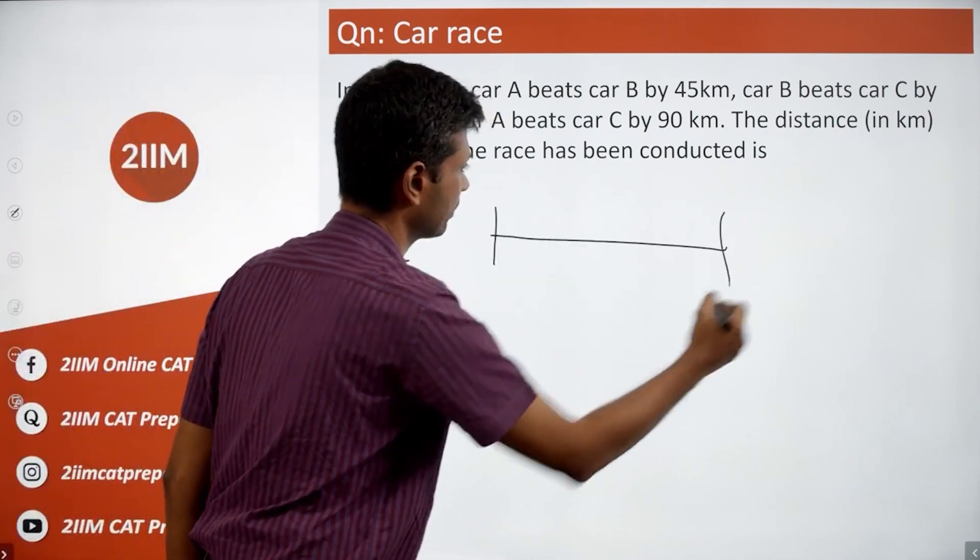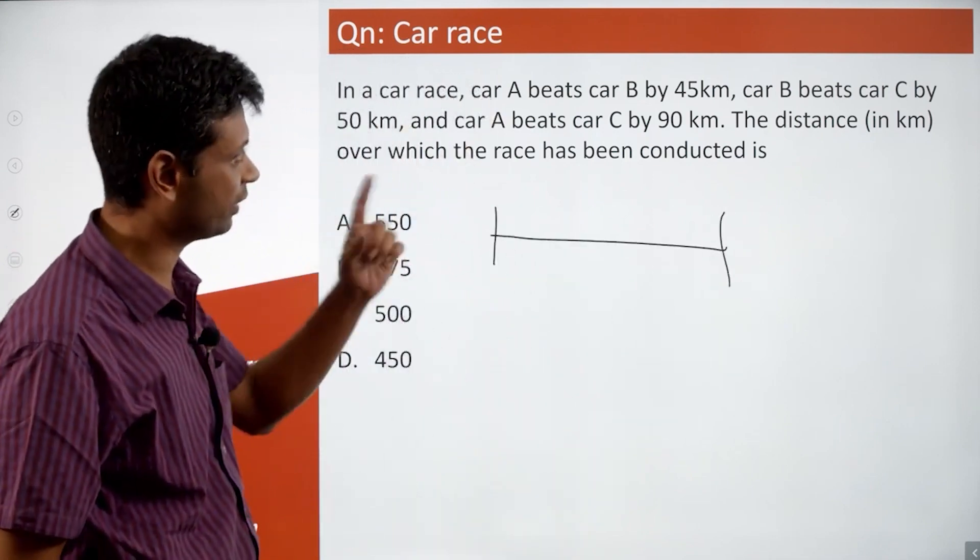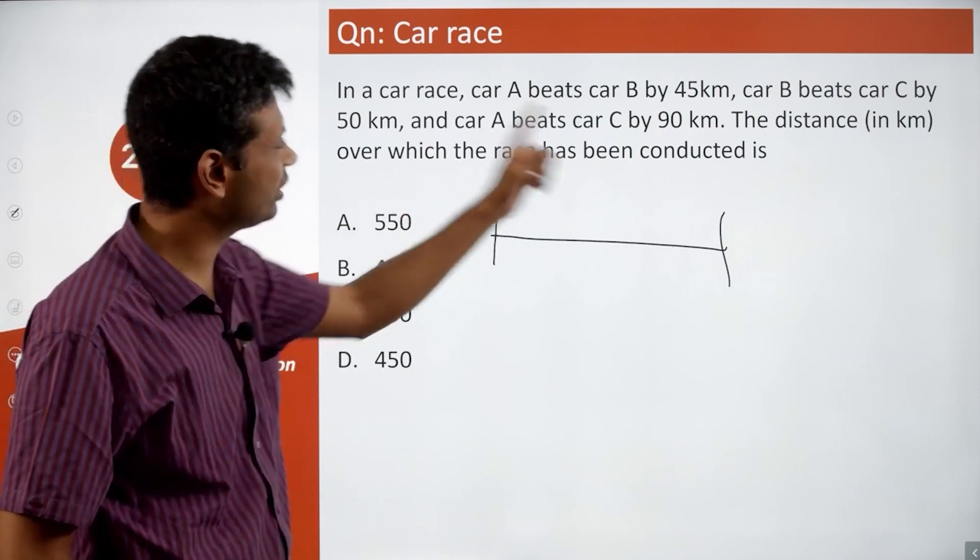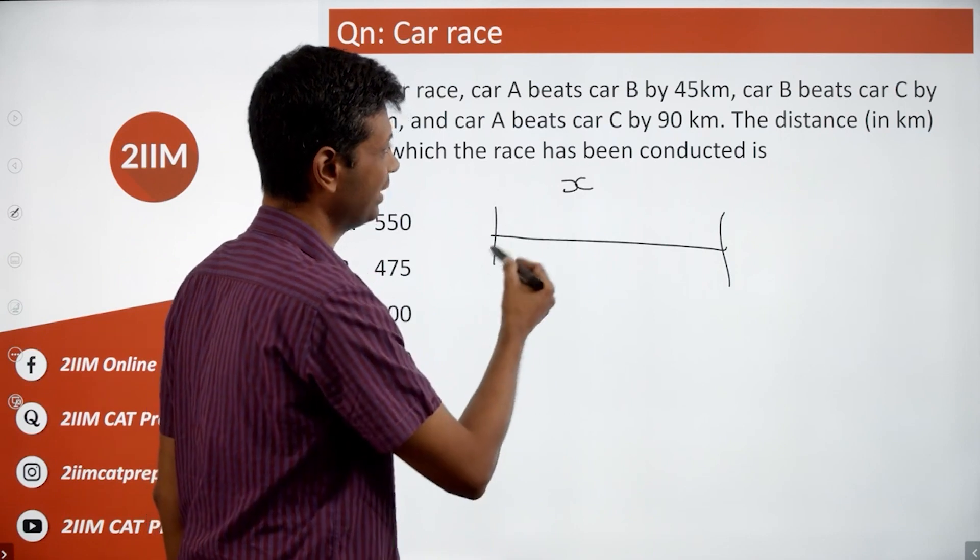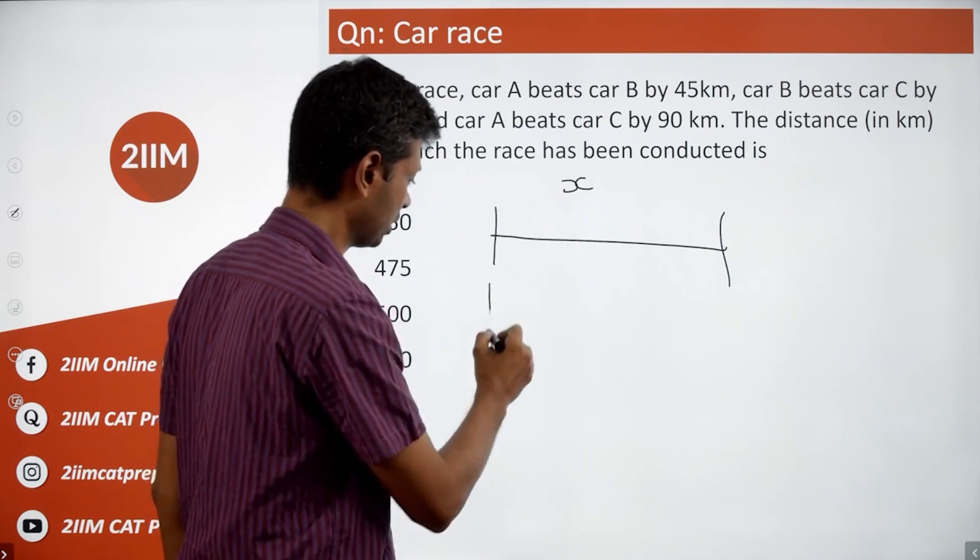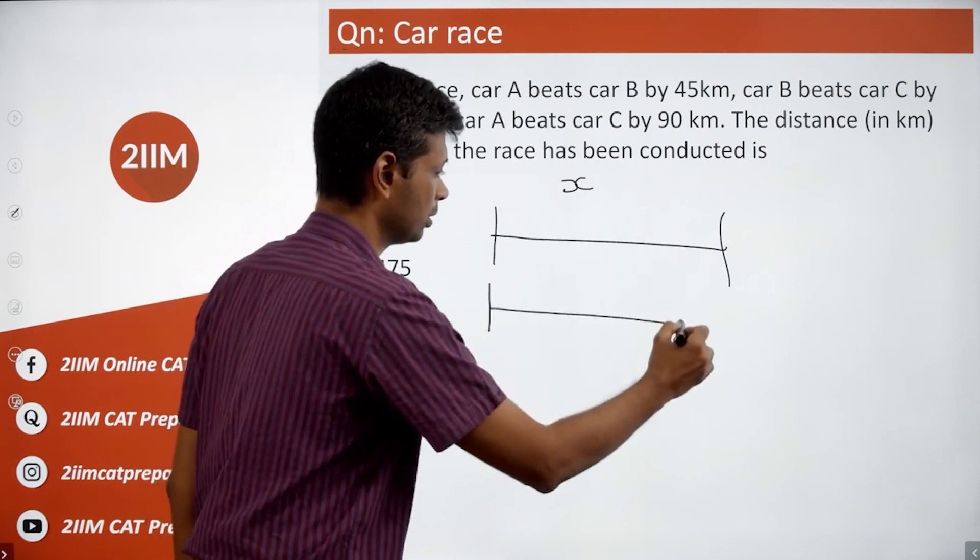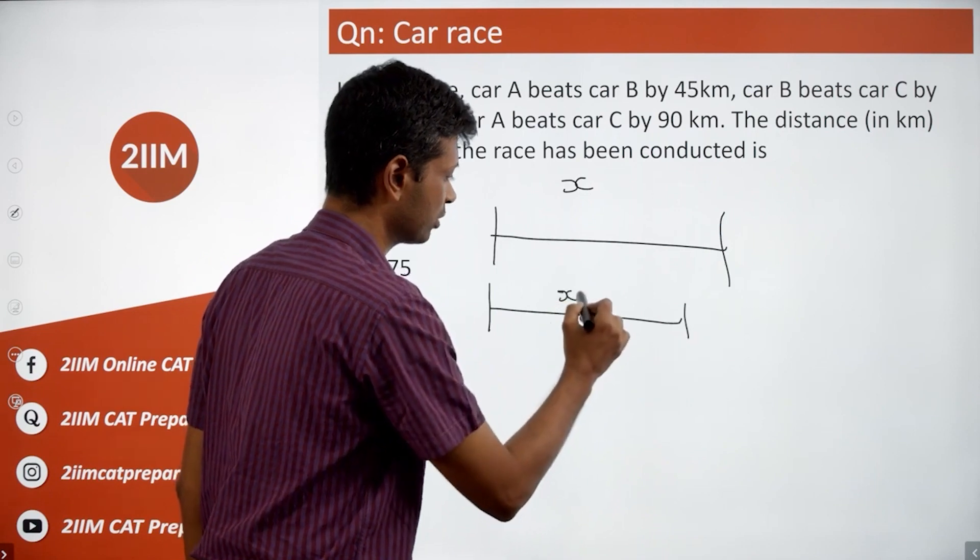A beats B by 45 and A beats C by 90, so let's assume the distance is X. When A beats B by 45, that means when A completes the race, B has done only X minus 45.